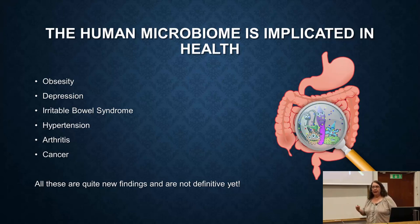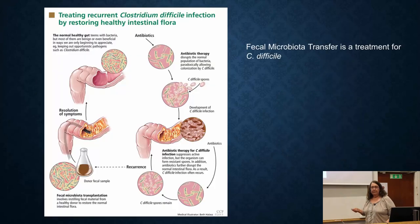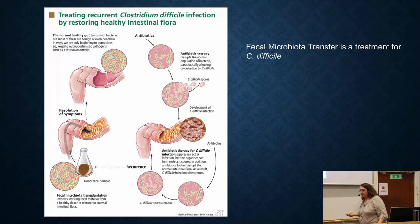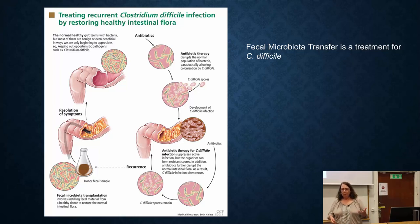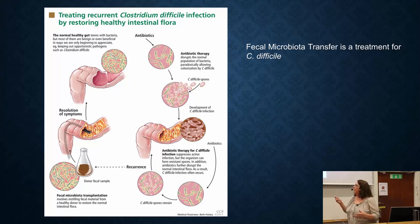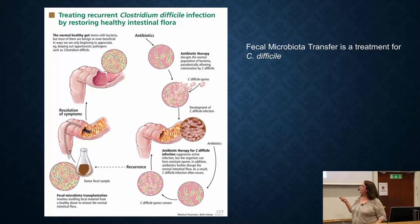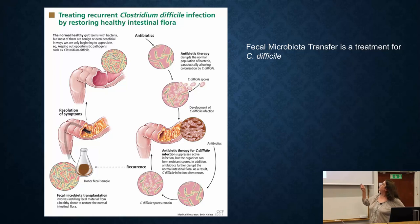One area where the microbiome has actually become a therapy is in Clostridium difficile infection. If you take a broad-spectrum antibiotic, you often lose many bacteria in your gut, allowing C. difficile to take over. It's very resistant to antibiotics and causes long-term diarrhea and painful gut symptoms. One current treatment is a fecal microbiota transfer — taking the microbiota from a healthy person to repopulate the gut.